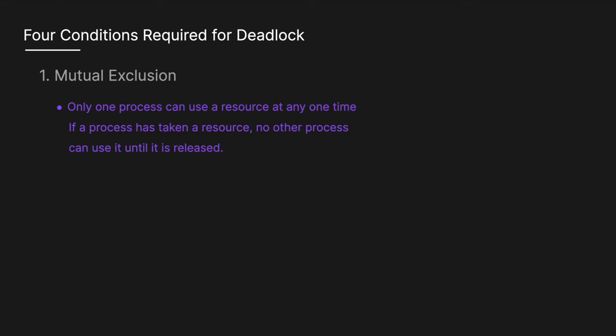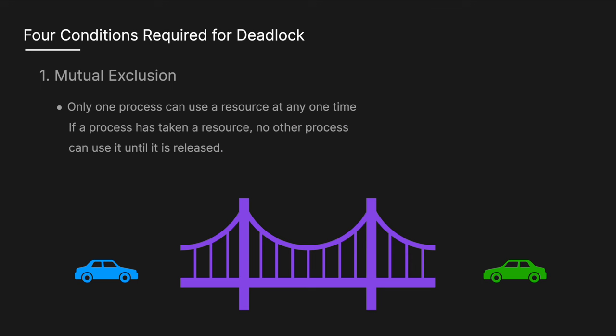A deadlock can only occur if the following four conditions are met simultaneously. The first is mutual exclusion — only one process can use a resource at any one time. If a process has taken a resource, no other process can use it until it is released. An analogy is a single-lane bridge where only one car can pass at a time; if a car is on the bridge, no other car can enter until the first car has crossed and left.